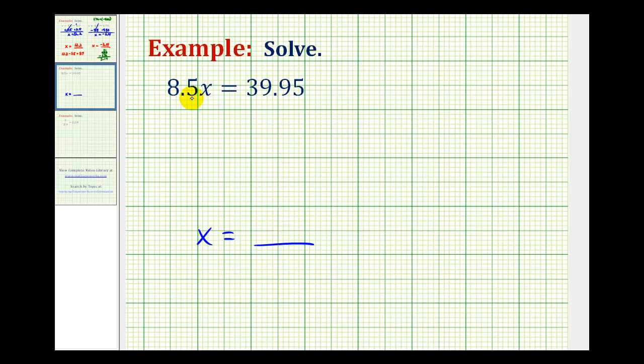When we see 8.5x, we need to recognize that means 8.5 times x. So we need to undo this multiplication in order to isolate the variable x.